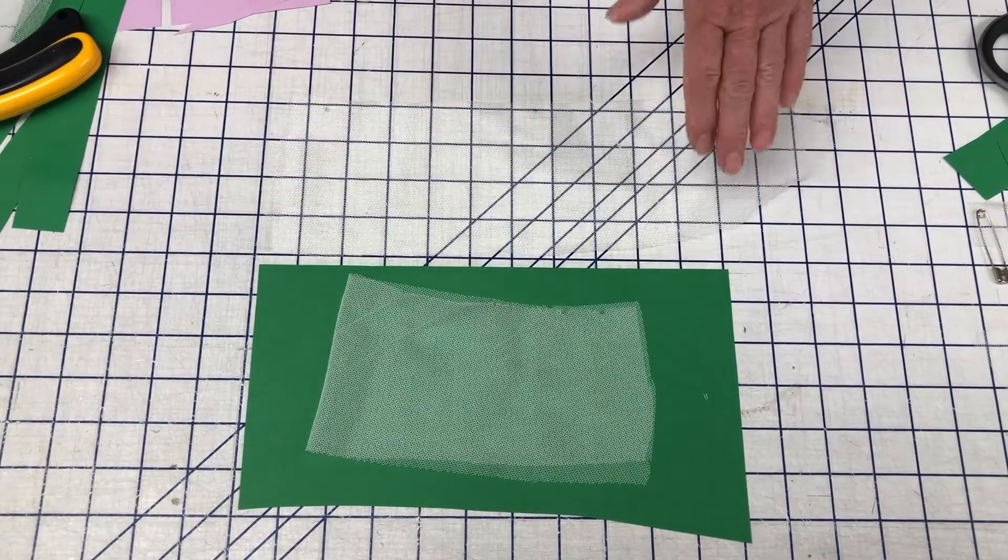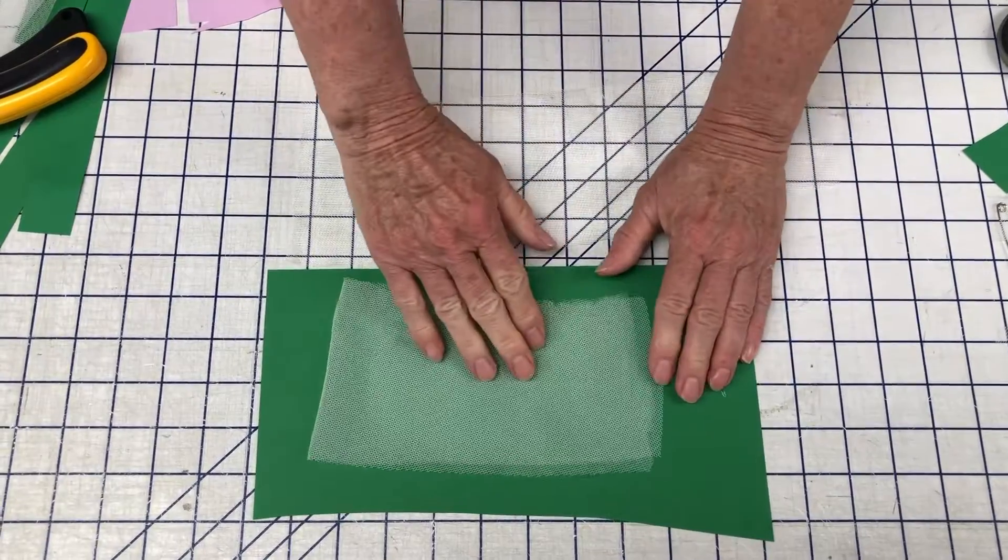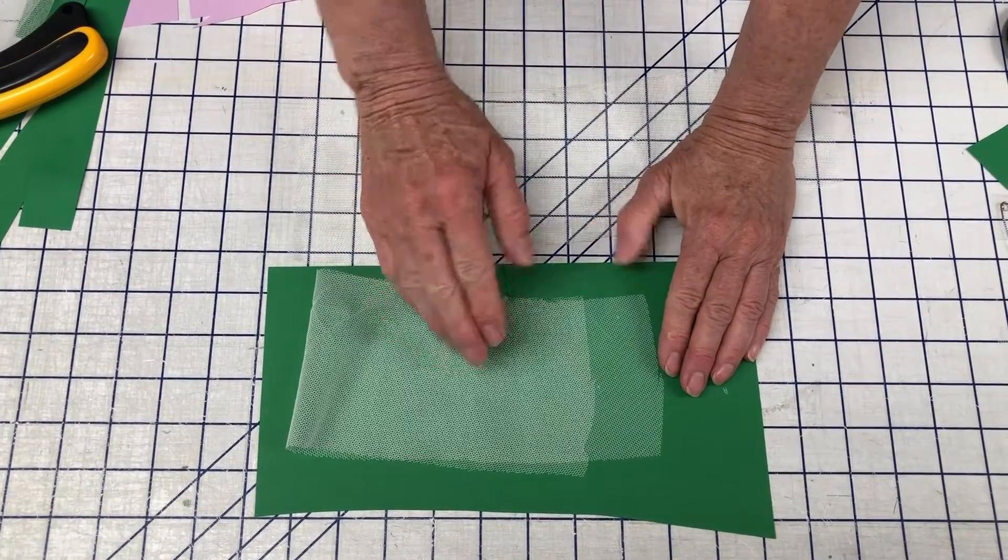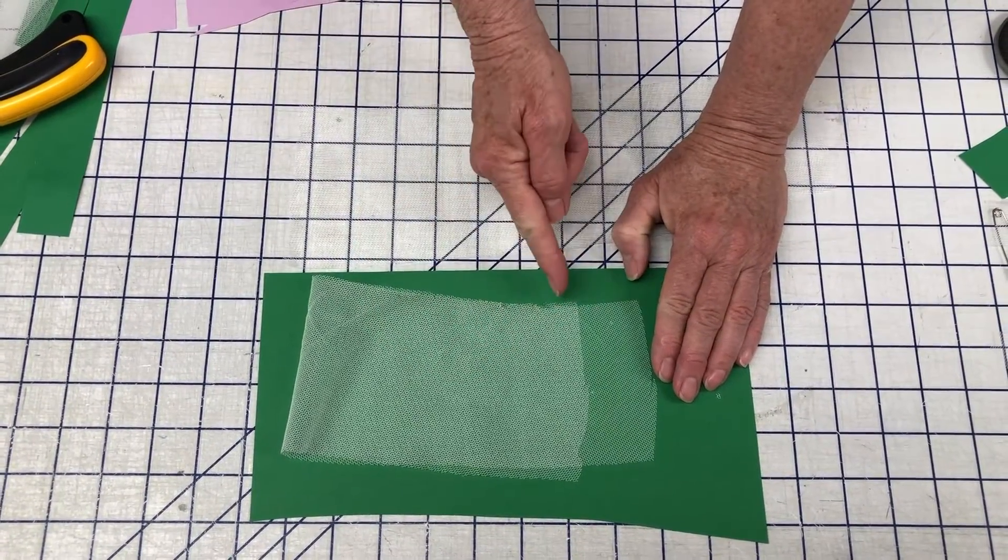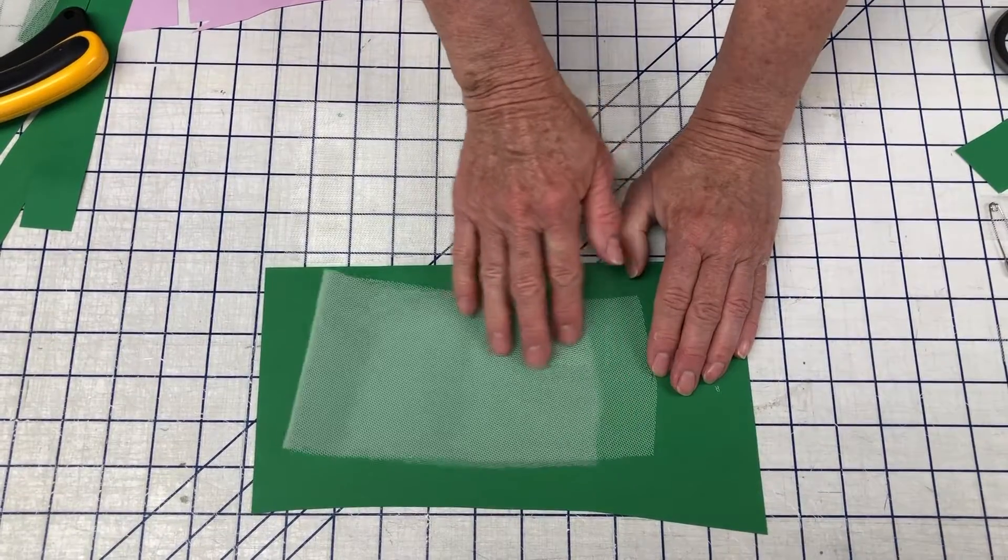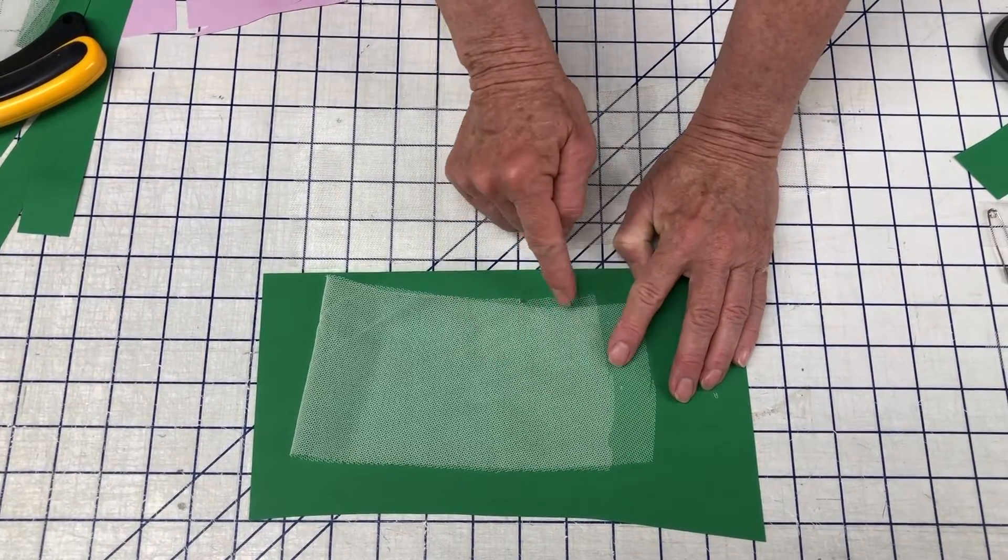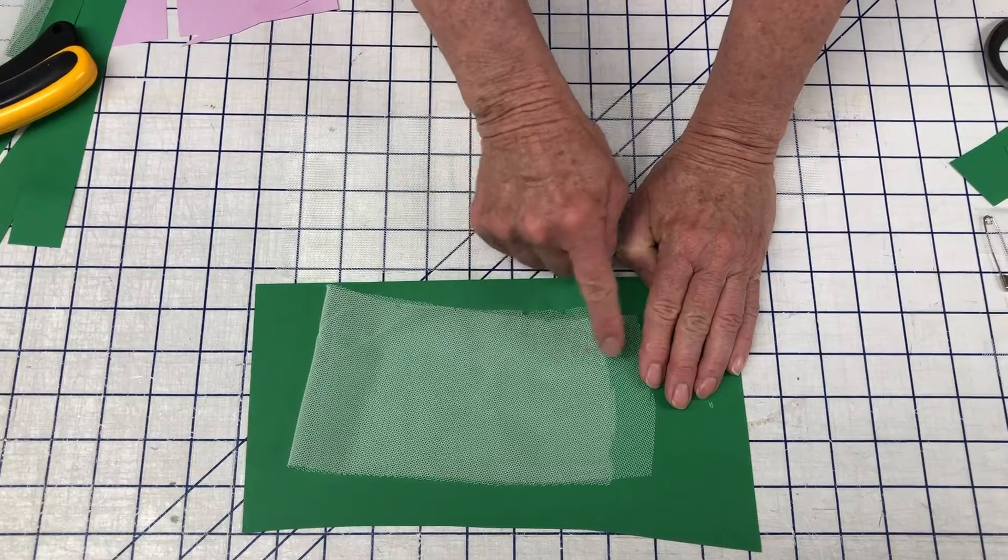So why do I have this on a piece of paper? There's a couple of reasons. If I have two layers and I want to make sure I'm cutting both layers, I can see my two layers.